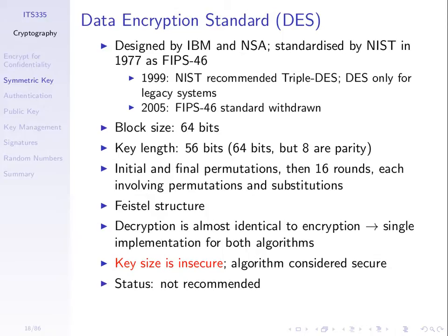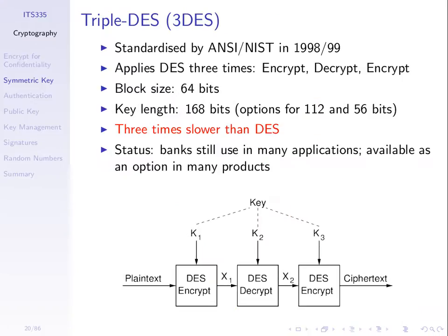When people realized DES was no longer good, they designed new ciphers. One was Triple DES — basically use DES three times using different keys each time. If one key is 56 bits, three keys triples that to 168 bits, and a brute force attack on 168 bits is much harder — not practical. The problem with Triple DES is that it was three times slower than DES, and DES wasn't designed for speed on current computer architectures. Triple DES is available today and considered secure but not common because it's quite slow.